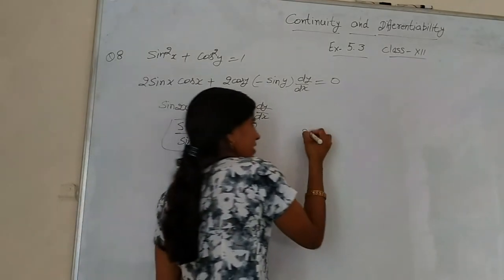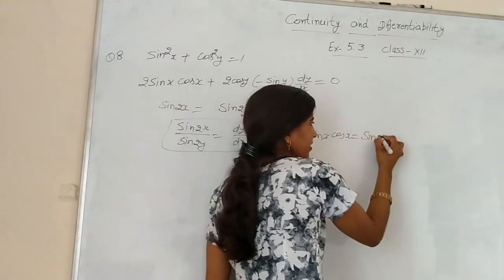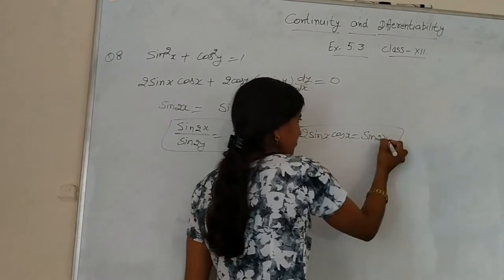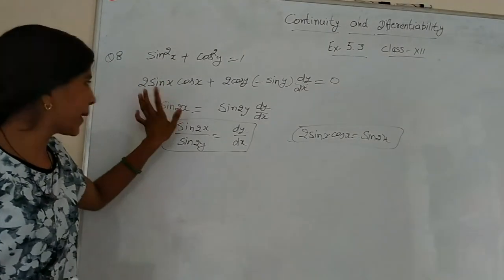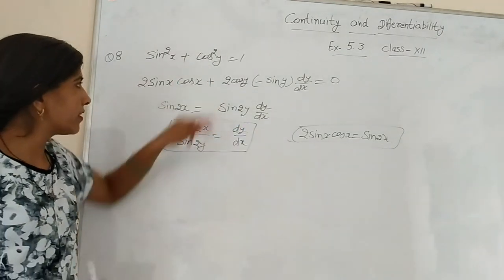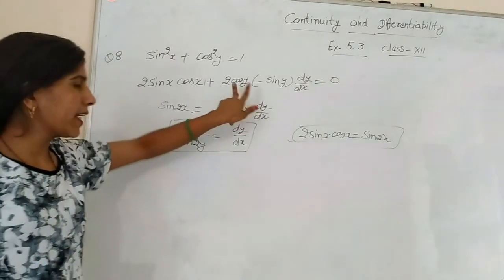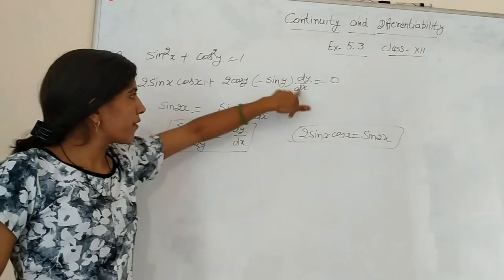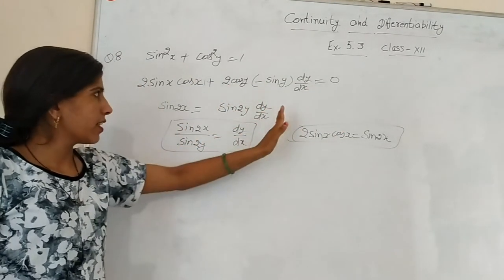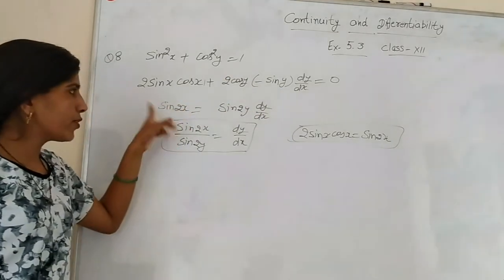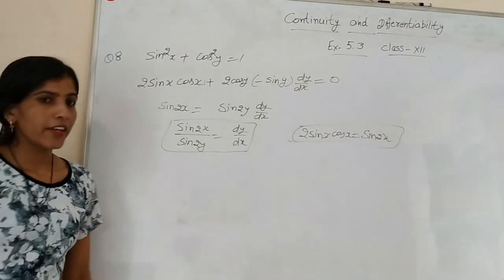You should know that 2 sin x cos x = sin 2x. Therefore dy/dx = sin 2x divided by sin 2y. This is our answer for Question 8.